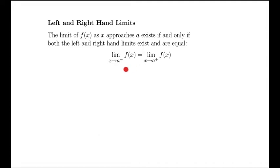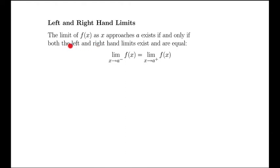We've talked about three things so far: left-hand limits, right-hand limits, and general limits of f of x as x approaches a, which means x gets close to a from both sides. These three things are related, and this is how.